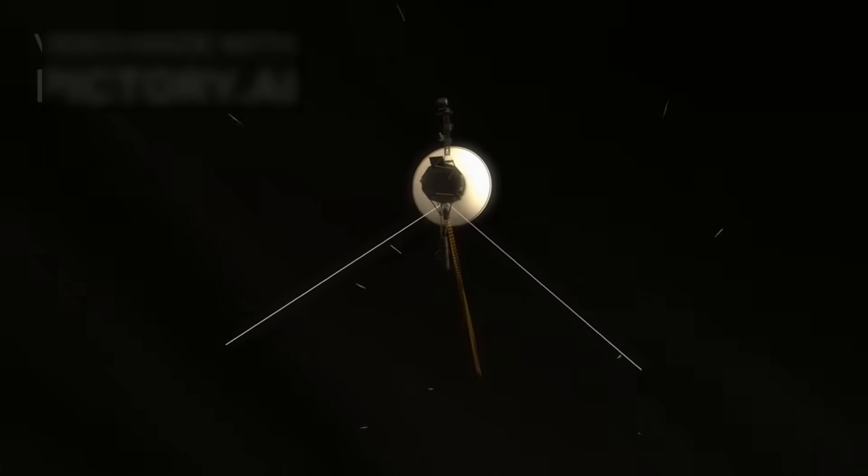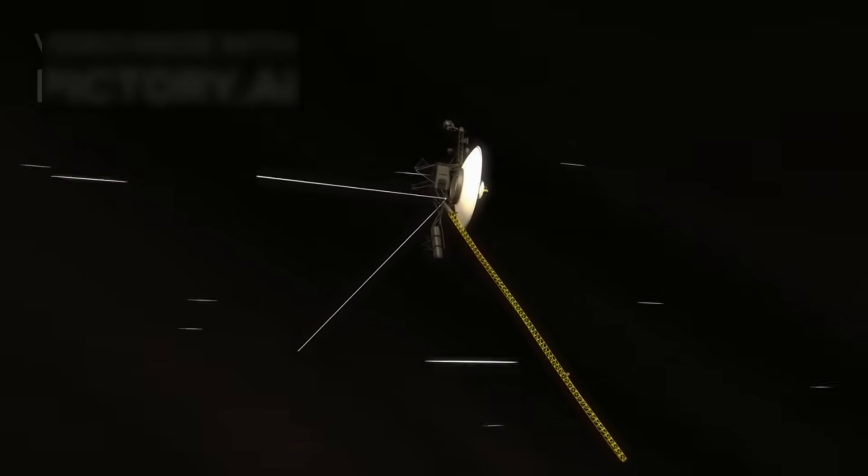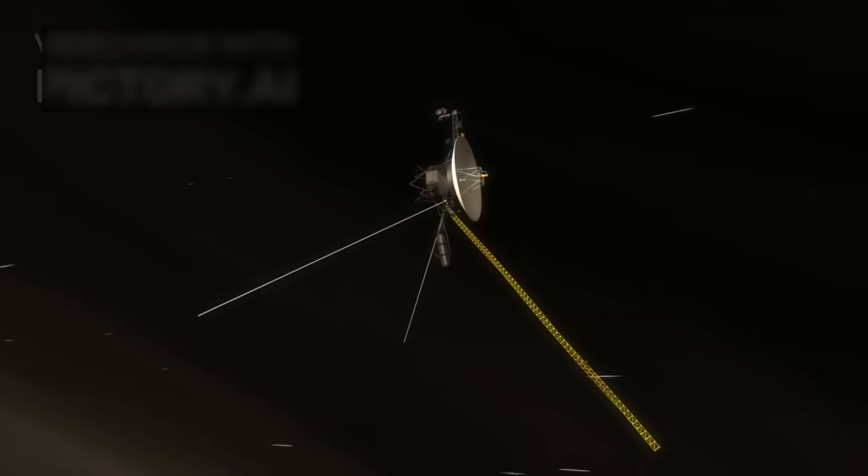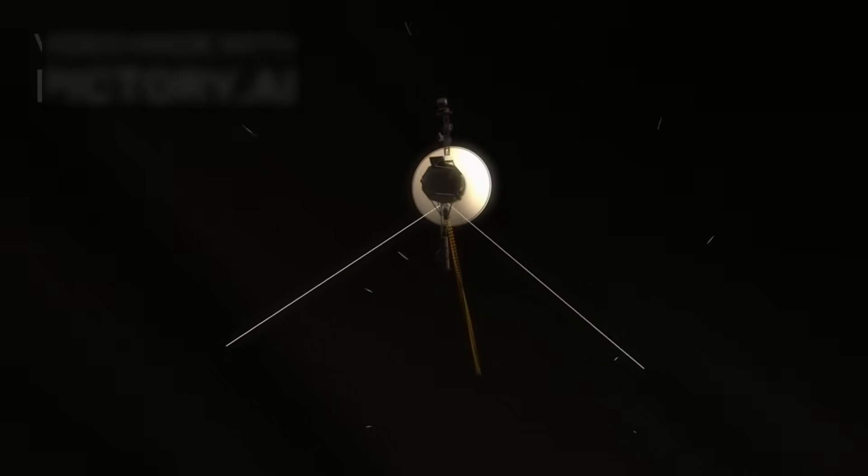For more than four decades, Voyager 2 has been traveling quietly, further and further away from the warmth of the sun, drifting beyond the last familiar planets, past the Kuiper belt, and into regions of space that, until recently, existed only in theory.